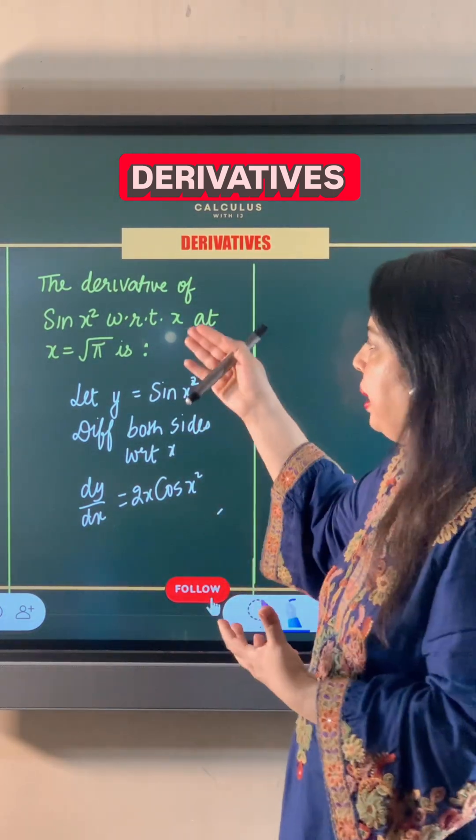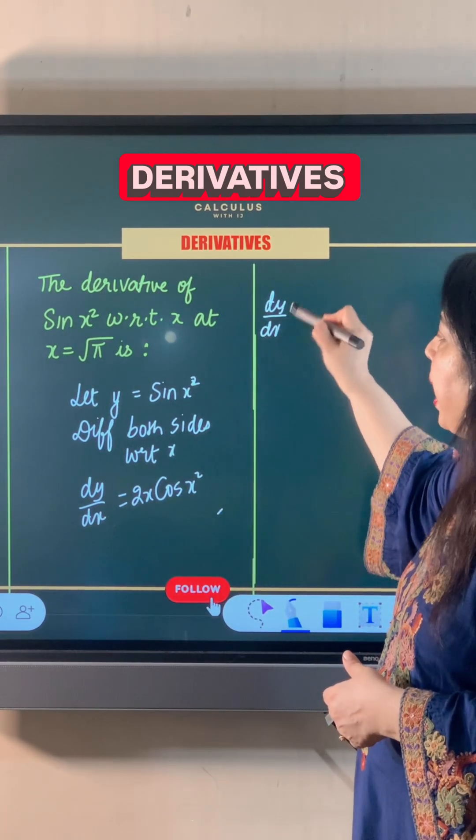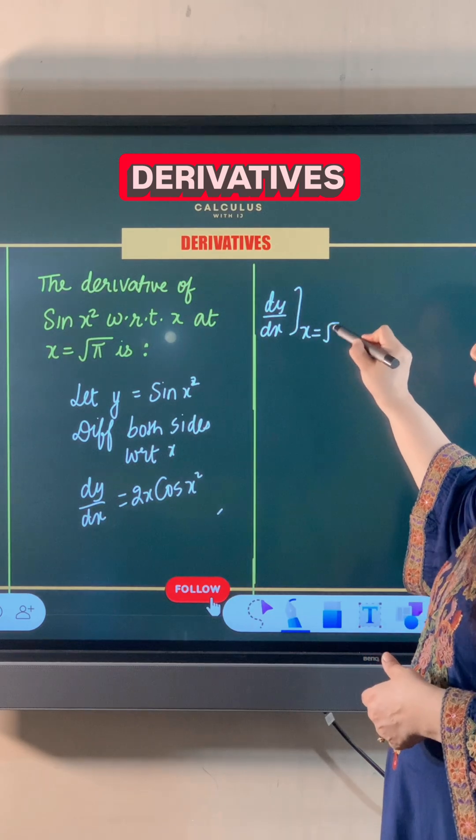Now we have to find this value at x is equal to √π. So let's put x is equal to √π in the derivative.